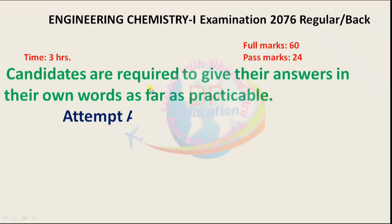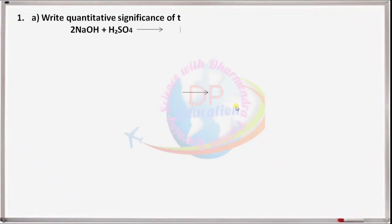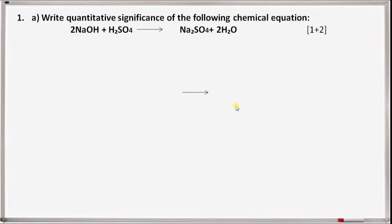Welcome to Engineering Chemistry first examination model question answer. In today's video, I am covering CTEBT first year, first semester. The first question is to write the quantitative significance of the following chemical equation: sodium hydroxide plus sulfuric acid gives sodium sulfate plus water.